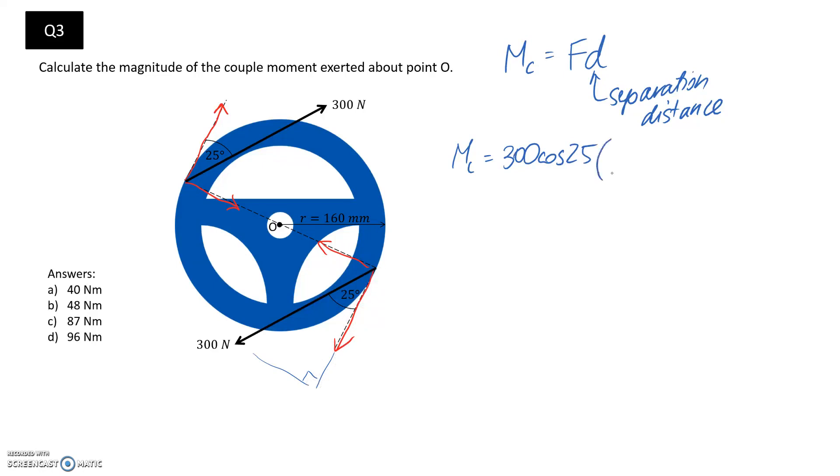Then we need to multiply it by the distance between these two forces, which is going to be the diameter of the circle. If the radius is 160 millimeters, the diameter is twice that, so that would be 320 millimeters.